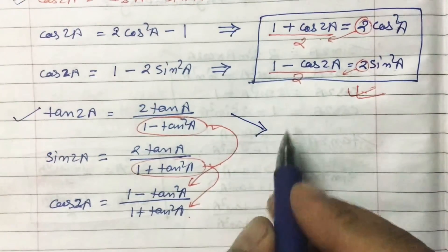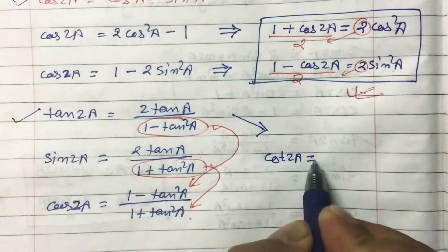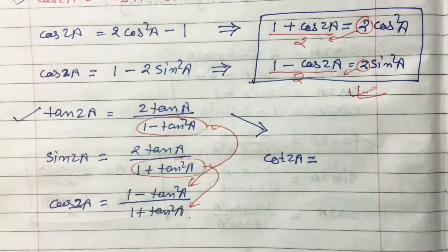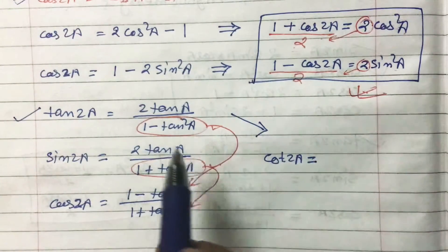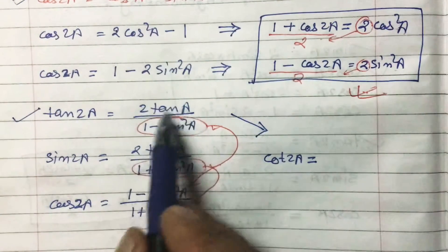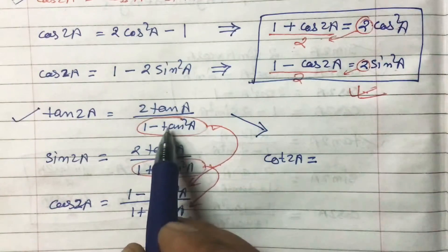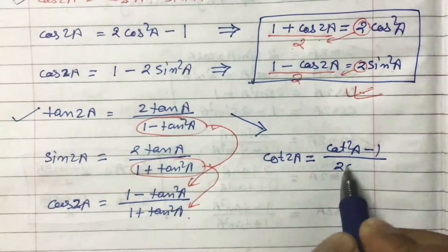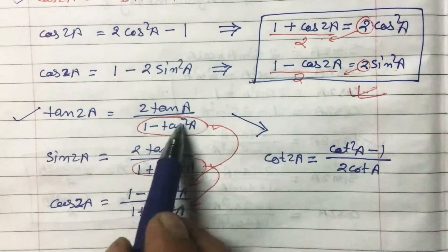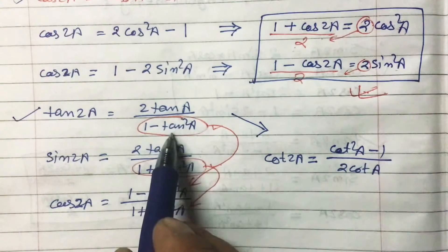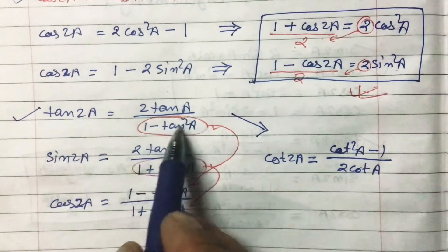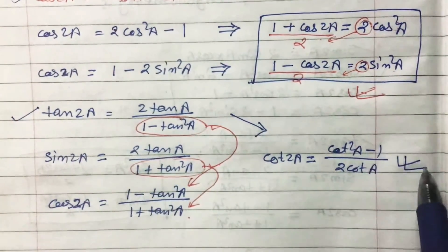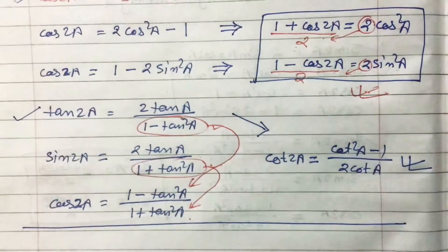For cot 2A, since tan and cot are reciprocals, we simply swap the numerator and denominator and replace tan with cot. So cot 2A = (cot²A - 1) / (2 cot A). The pattern from tan 2A moves up and down, and the front term goes to the back accordingly.